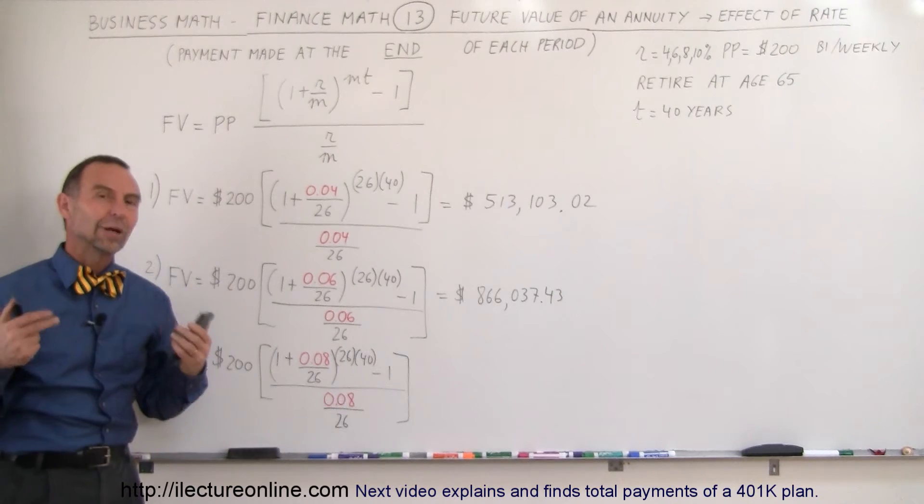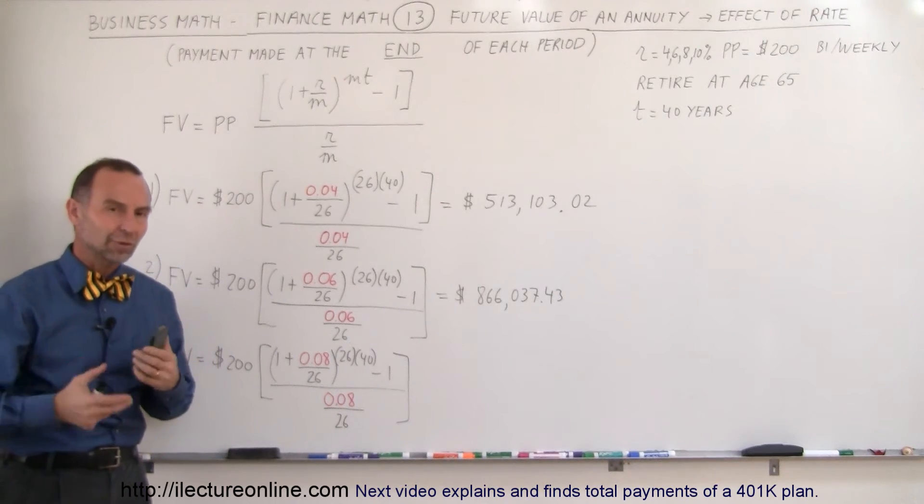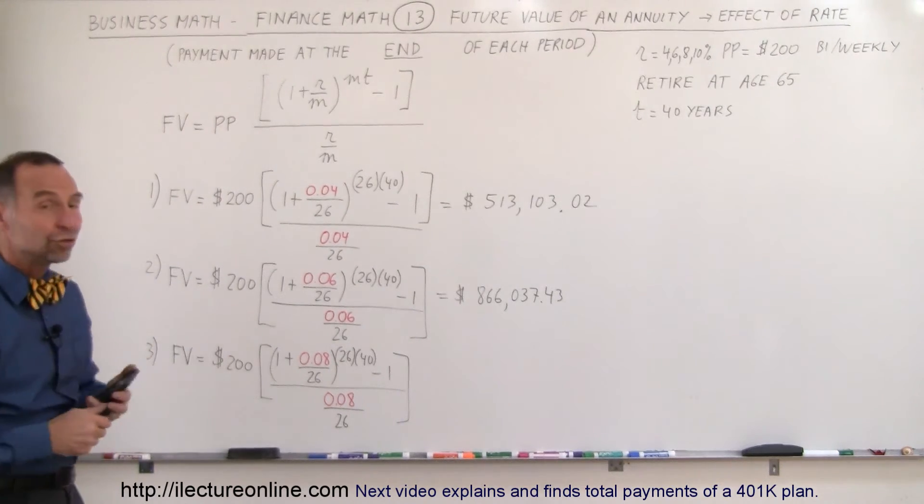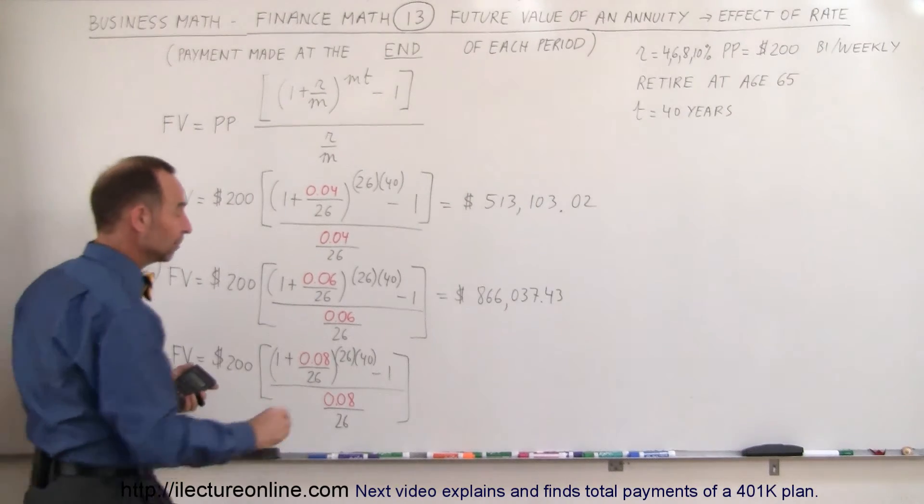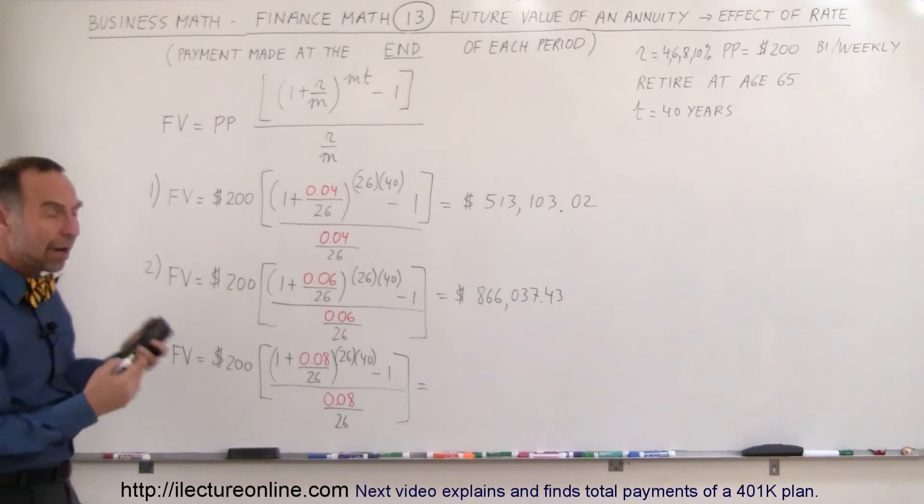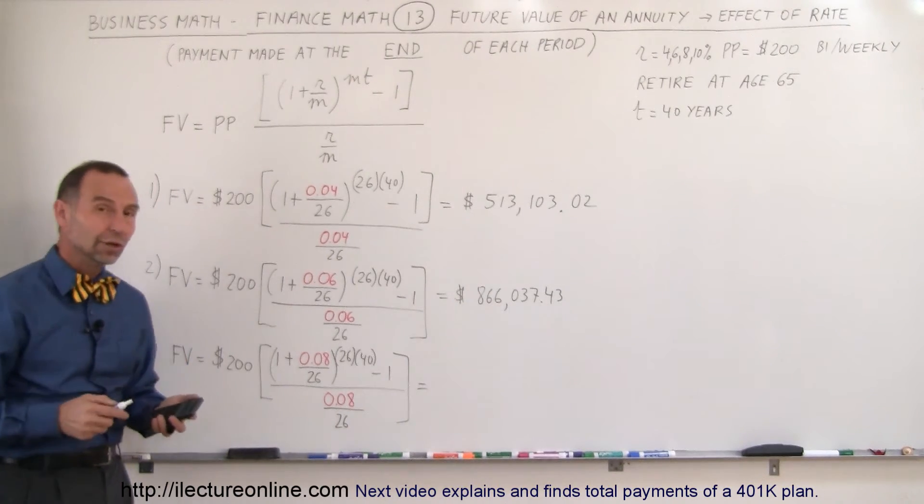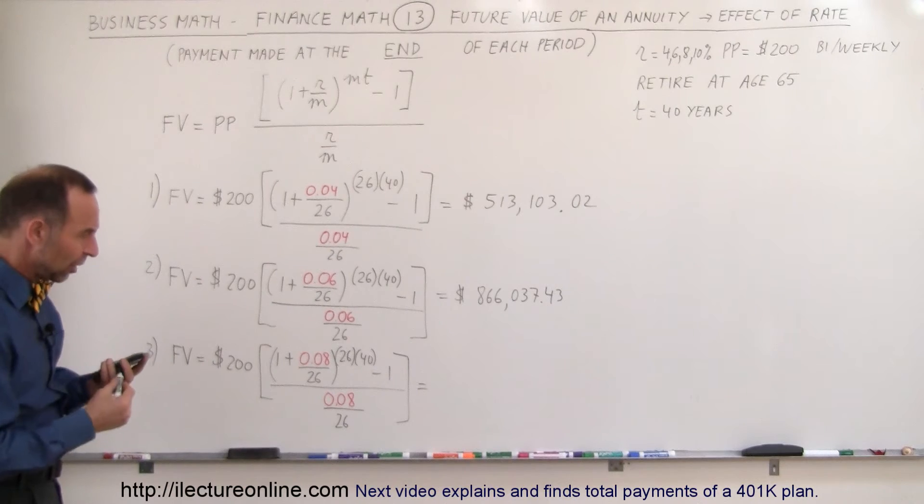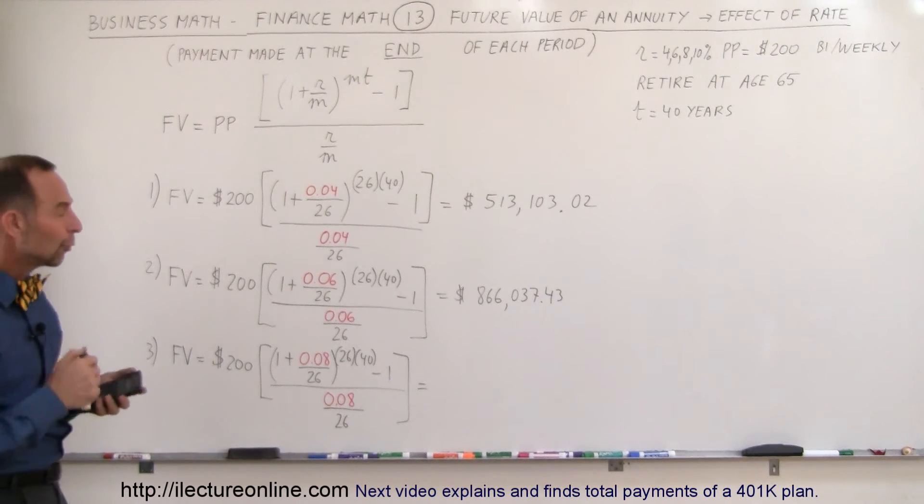What if you could earn a rate of 8% if you do the right investments, have the right advice, do all the right things, and you start earning 8% on your investment? Typically, they don't put the money in the bank. They'll put it in bonds and stocks, and if it's wisely invested, you could earn 8% over a 40-year period. So how much money would you have after 40 years?